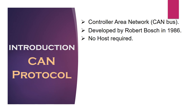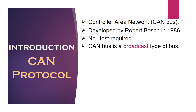The feature which makes CAN bus unique among other communication protocols is that it is a broadcast type of bus, which means each node can hear all transmissions. The complexity of a node can range from a simple I/O device, a sensor, or an embedded controller. The node may also be a gateway allowing a general purpose computer to communicate over a USB or Ethernet port.